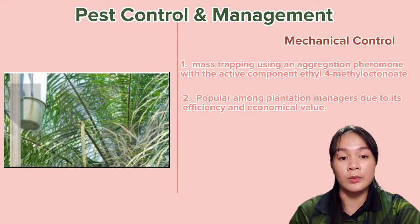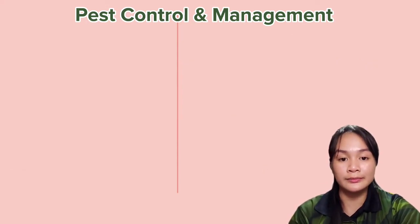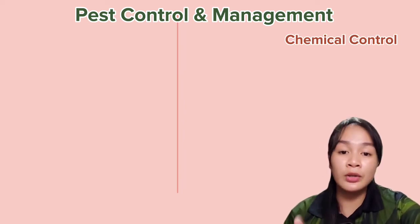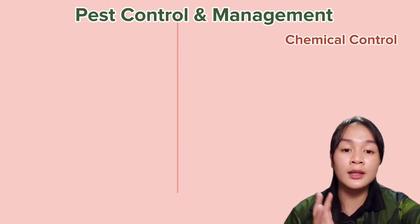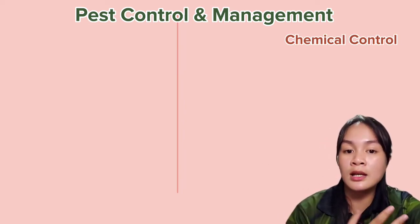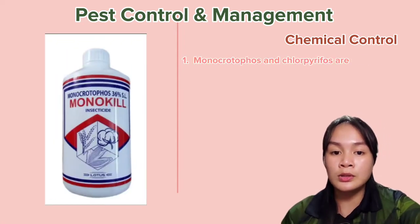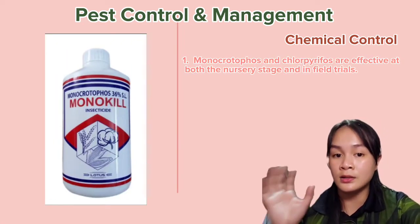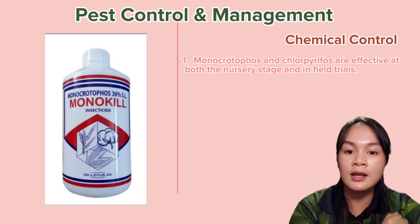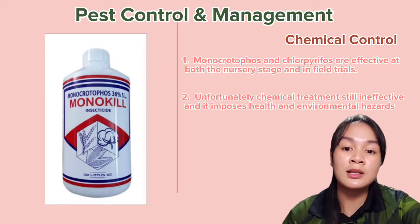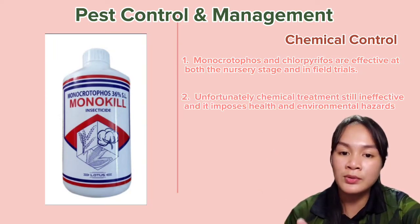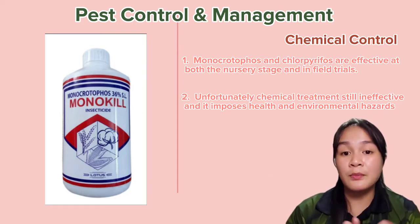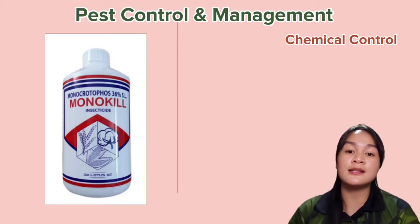For physical or mechanical control, pheromone trapping or mass trapping can be used. Mass trapping uses an aggregation pheromone with the active component ethyl 4-methyloctanoate. This is popular among plantation managers due to its efficiency and economical value. Toward chemical control, the application of insecticide is not always appropriate due to the beetle being insufficiently exposed. Monocrotophos and chlorpyrifos are effective at both nursery stage and in field trials; however, chemical treatment is still ineffective and involves health and environmental hazards.